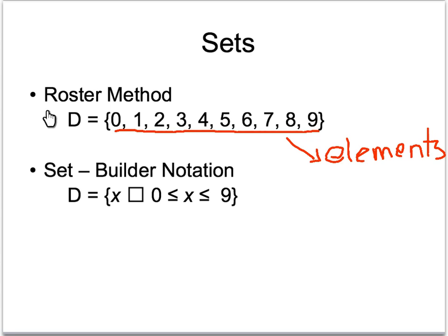With the roster method, this says that set D is equal to 0, 1, 2, 3, and so on. And you list out all of the elements in the set.